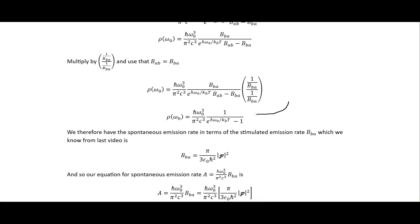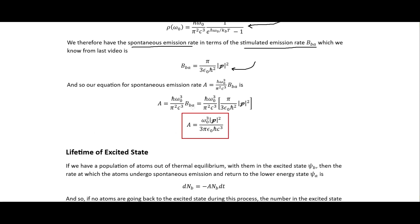After algebraic manipulation, we get the spontaneous emission rate in terms of the stimulated emission rate, which we know from the last video. Substituting in B_ba and canceling terms, we end up with the expression in the red box: this is our rate of spontaneous emission.